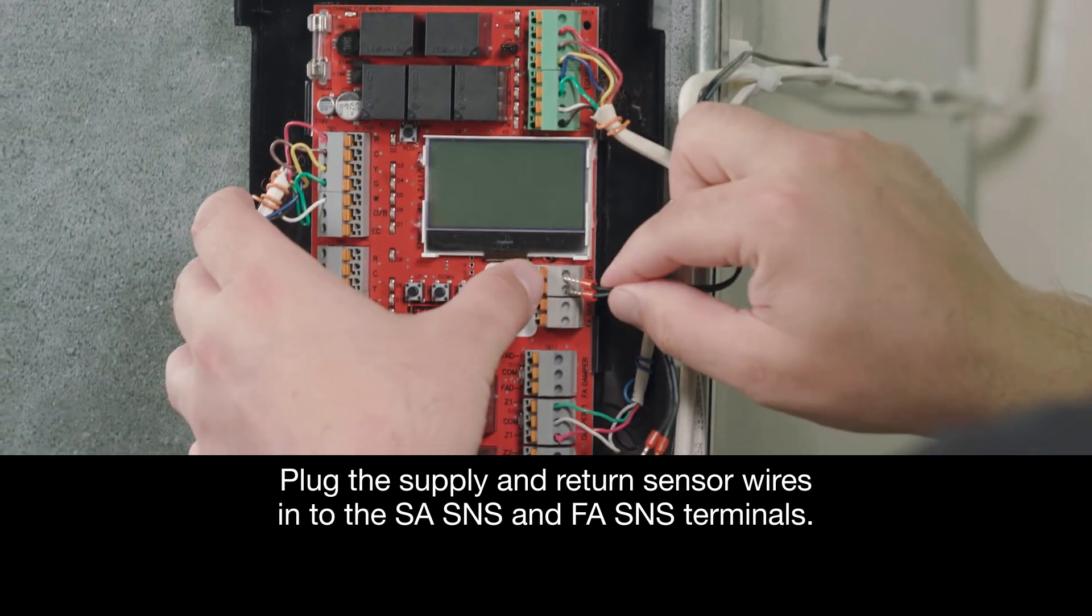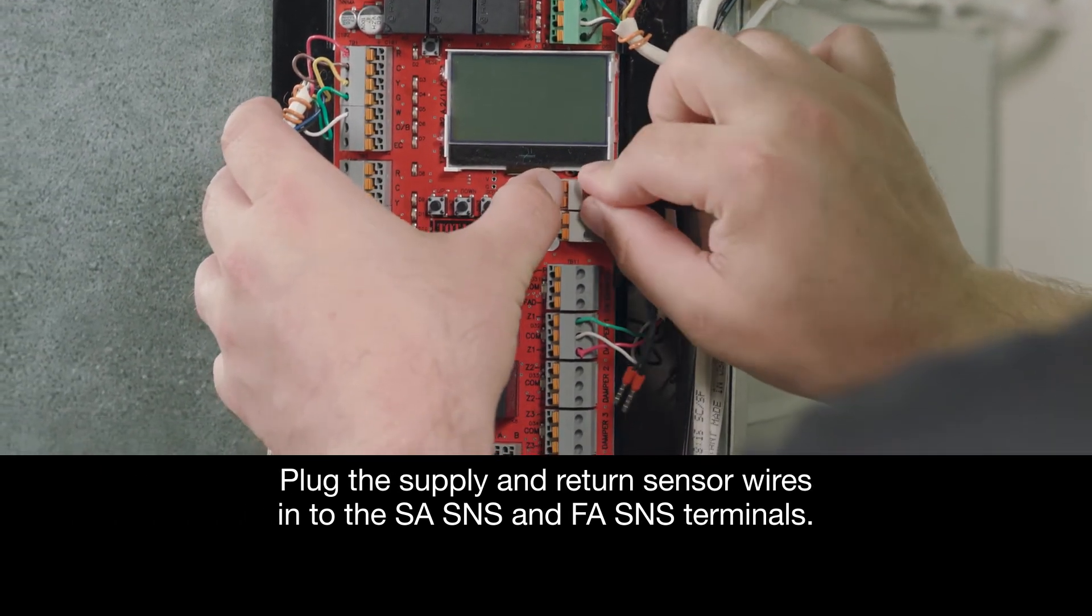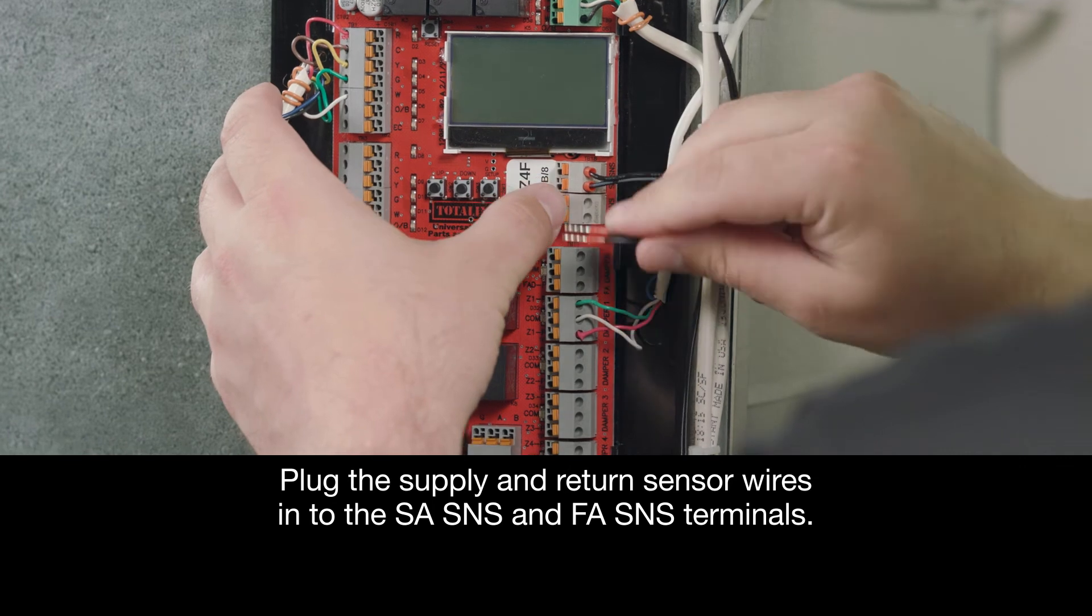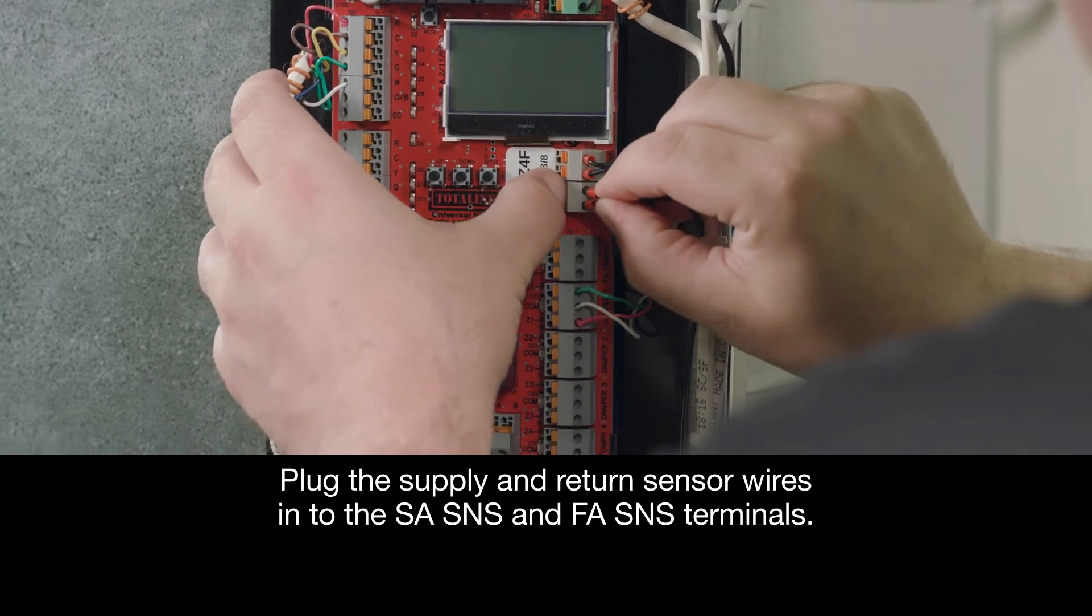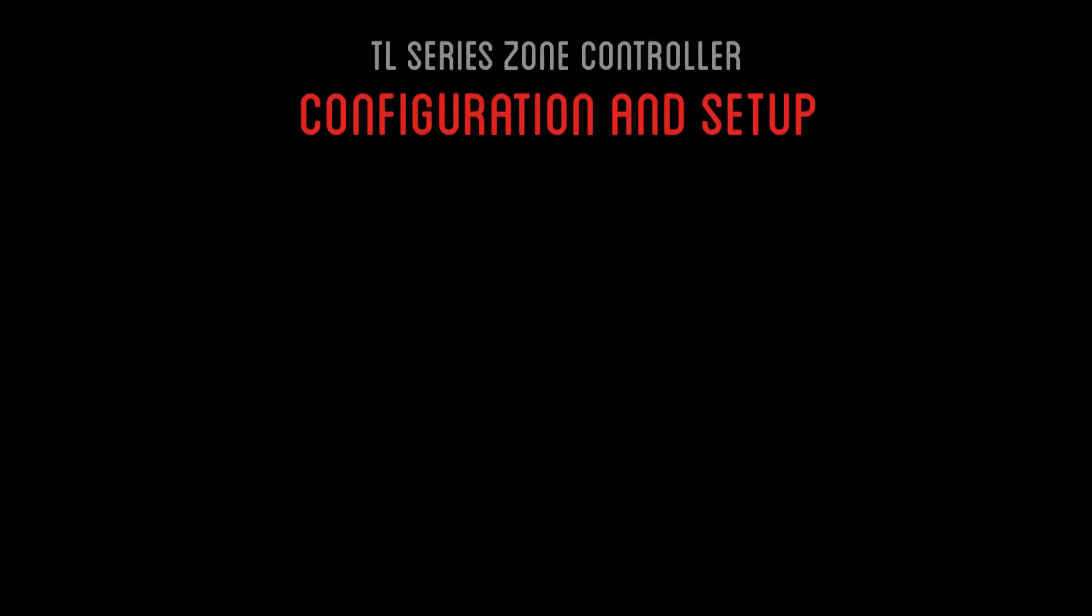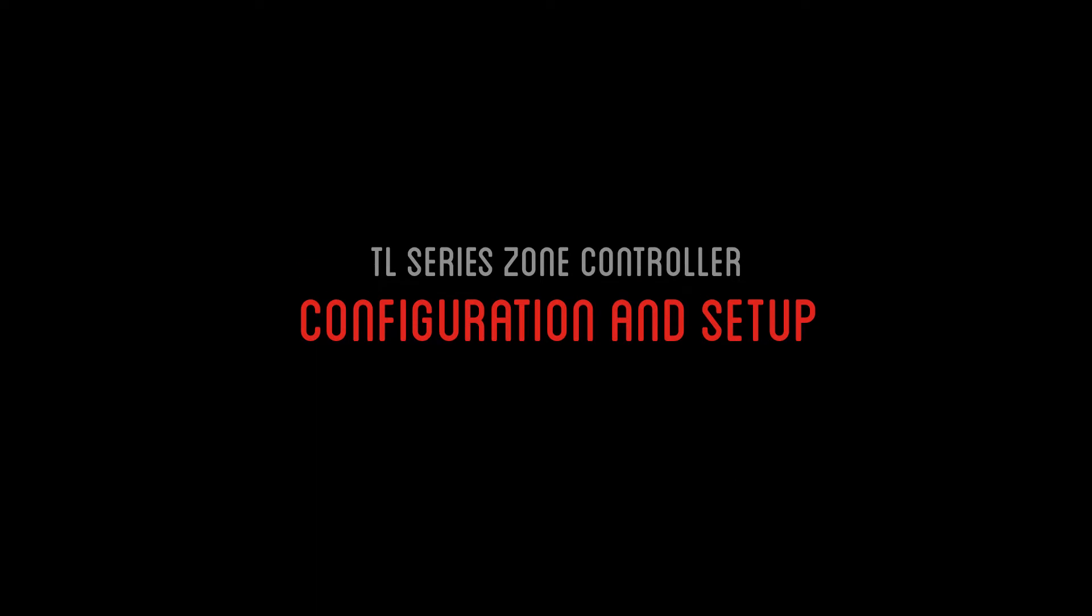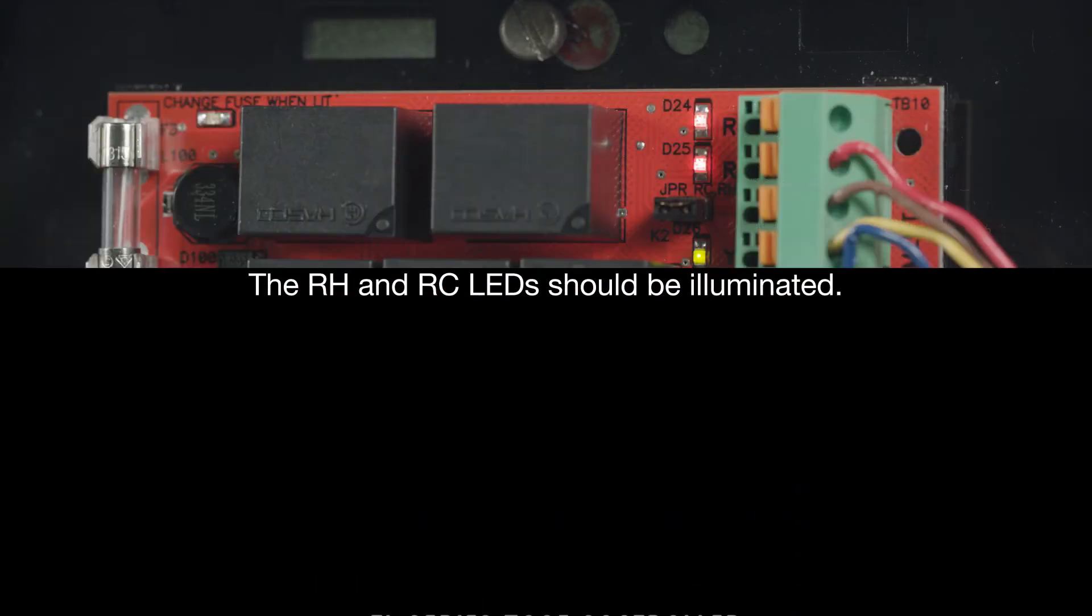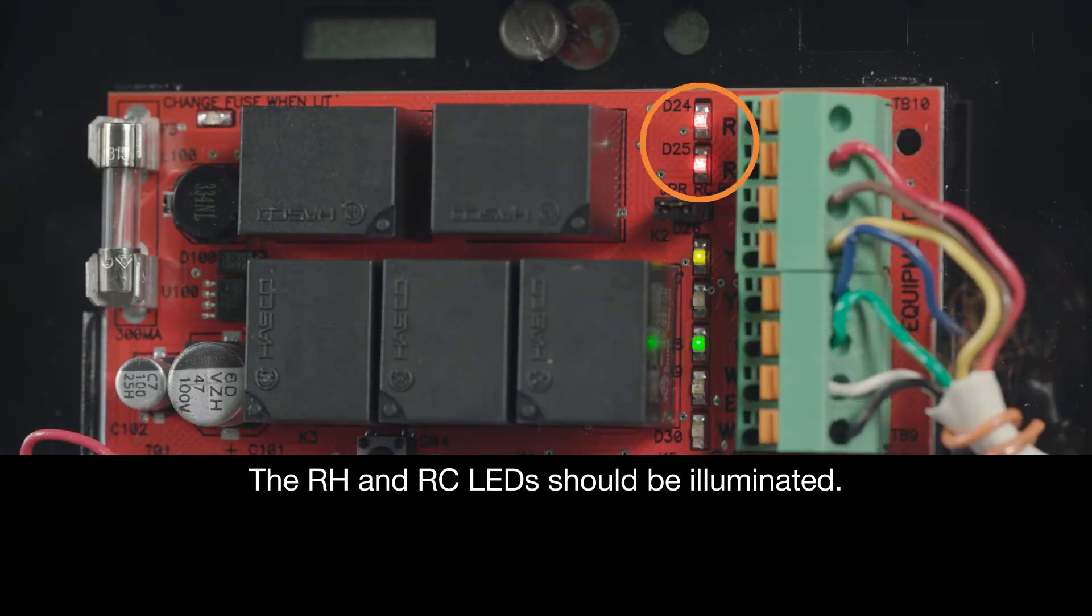Next, plug the supply and return sensor wires into the SASNS and FASNS terminals. Now that all wiring for the thermostats, zone dampers, and equipment is complete, it's time to configure and set up the unit. We'll do a setup for an AC and gas furnace system. At this point, the RH and RC LEDs should be illuminated.